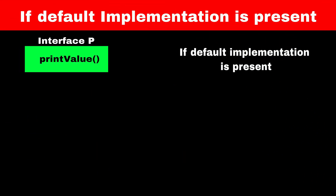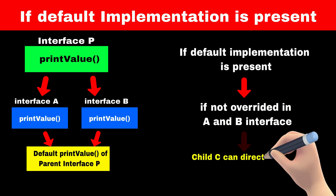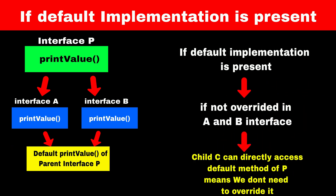Another scenario: if the default implementation of this method is present in parent interface B but is not overridden in child interfaces A and B, then class C can directly access the default method from parent interface B — C does not need to override the print value method. But if the default implementation of this method is already present in both parent interfaces, then we have to override this method in the child class.